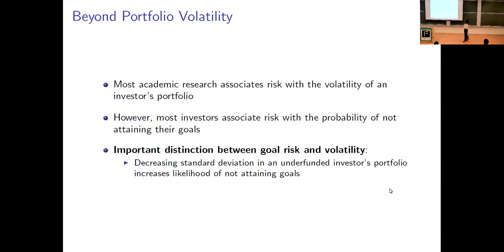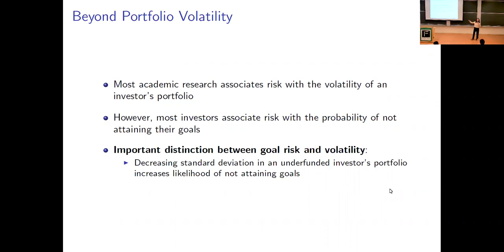Let me start by talking about the notion of risks beyond portfolio volatility. Most academic research associates risk with the volatility of the investor's portfolio. However, most investors — everyday households — actually associate risk with the probability of not attaining their goals. People have multiple goals at different times in their life: retirement goals, goals of financing a house purchase, buying a car, financing a vacation, etc. There is an important distinction between goal risk and volatility.